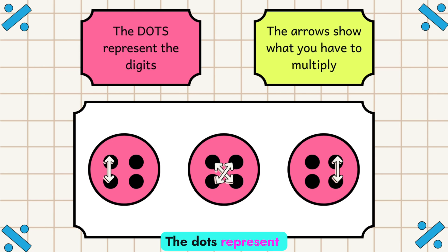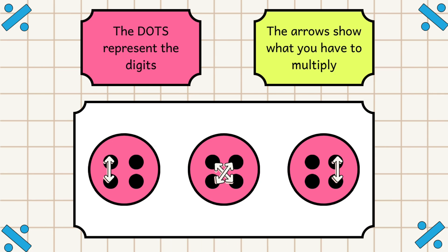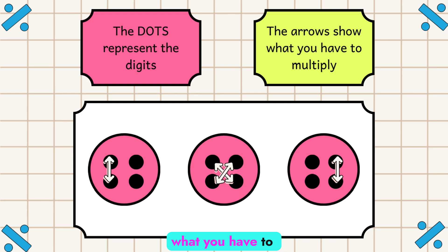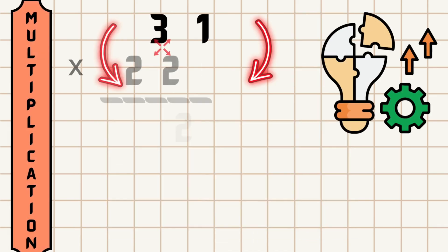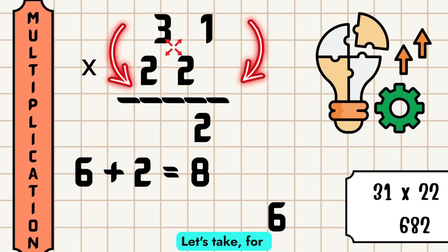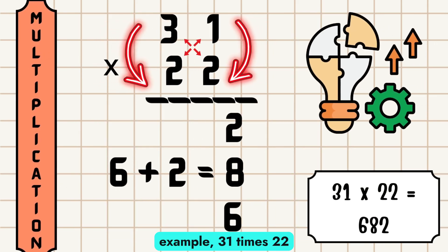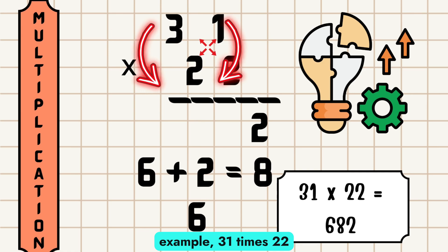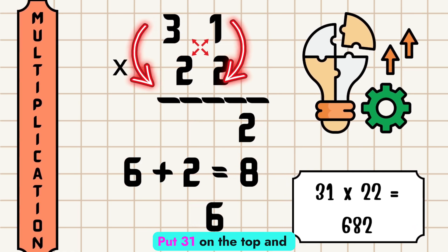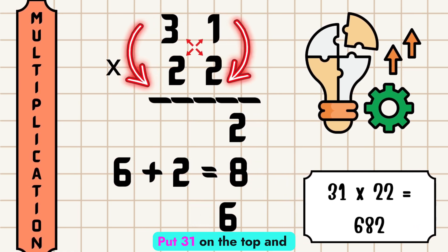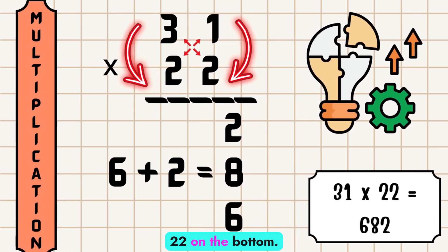The dots represent the digits and the arrows show what you have to multiply. Let's take for example 31 times 22 — put 31 on the top and 22 on the bottom.